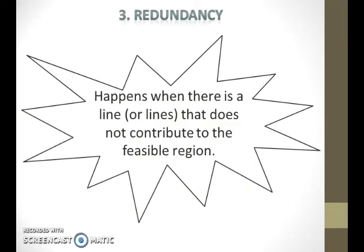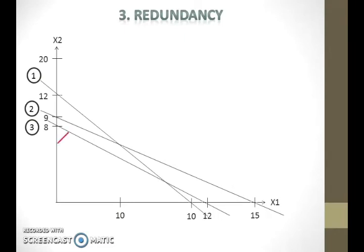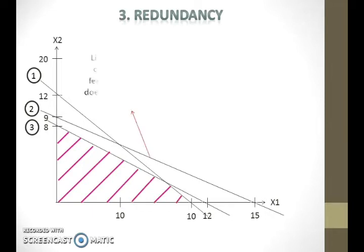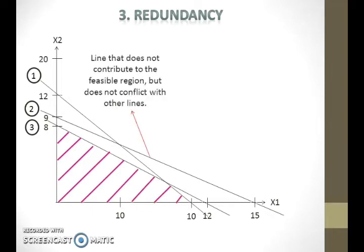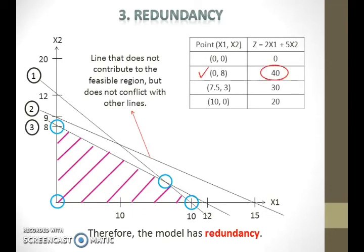Redundancy happens when there is a line that does not contribute to the feasible region. We first draw the graph and then identify the feasible region. Note that there is a line that does not contribute to the feasible region but does not conflict with other lines. Therefore, the model has redundancy. Bear in mind that when the model has redundancy, it still has an optimal solution.